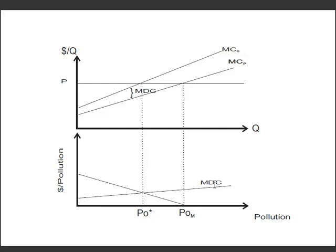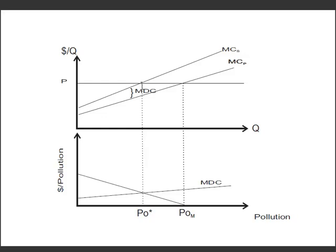Now we put the two curves together for the firm and for society. We get that the marginal net benefits to the firm are downward sloping, and the marginal damage cost is upward sloping, while the private optimum is achieved at POM. The social optimum would be achieved where the equimarginal principle is satisfied, and that is at PO*, where the marginal net benefits to the firm is equal to the marginal damage cost. We can also look at this in terms of our more familiar externalities graph, where we've shifted the marginal cost of society, and where that equals the price gives us the social optimum. So basically the goal of society is how do we get an economy to move from POM back to PO*.